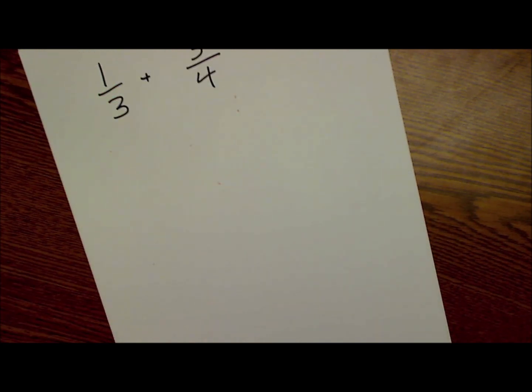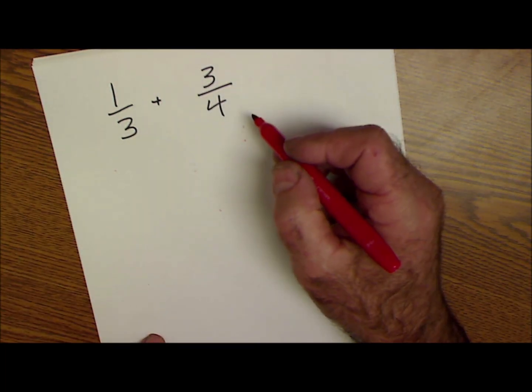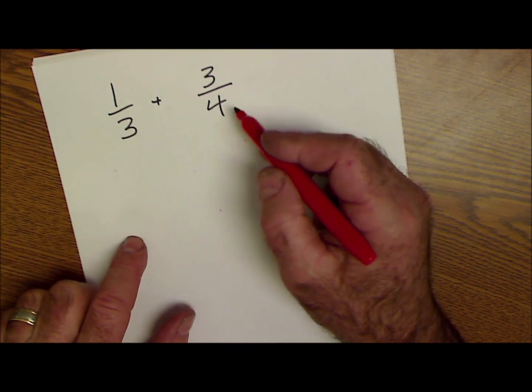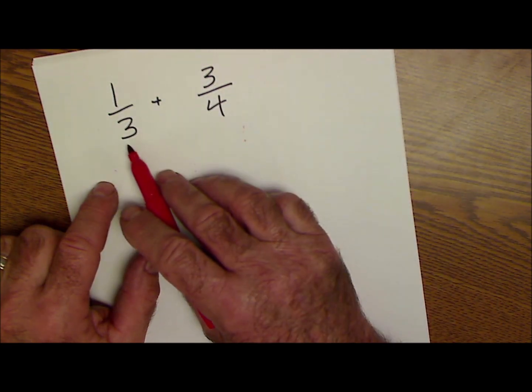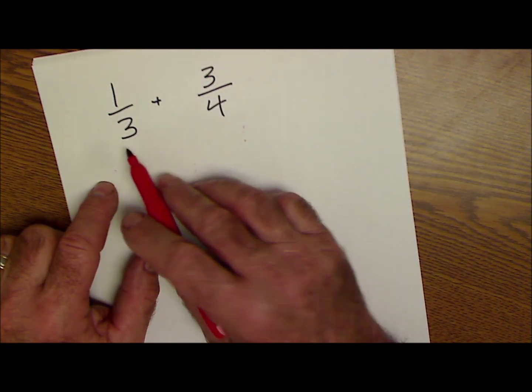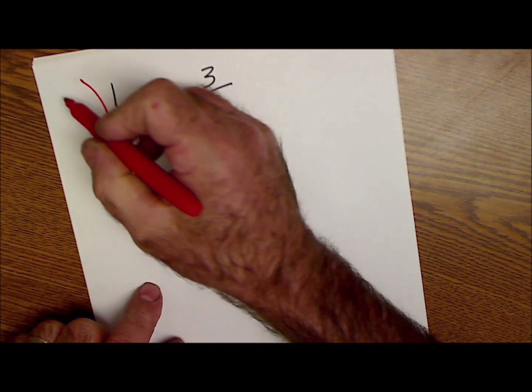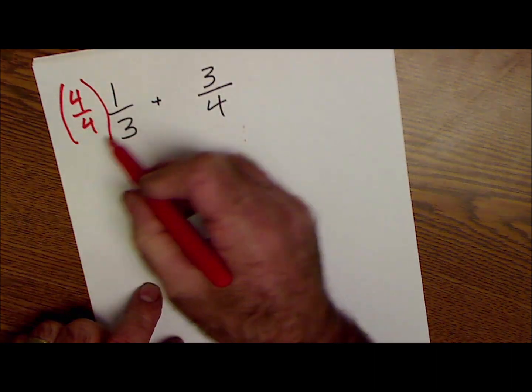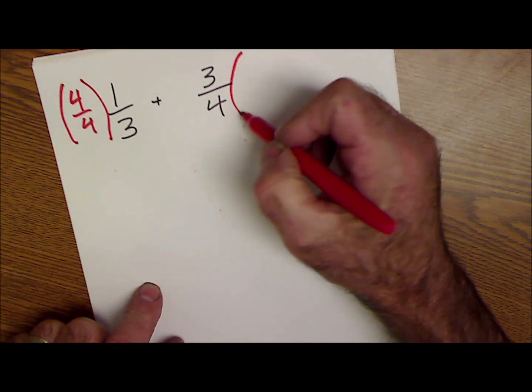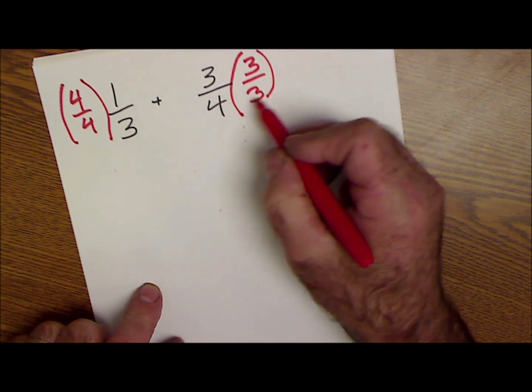Right here, it gets a little bit more complicated. Remember, the goal is to have the same number on the bottom. There's not one number I can multiply one of these fractions by to get there. So I got to look for the number that both of these are going to go into. So three times four is 12. 12 is going to be that number. I'm going to multiply by one here, four over four, that's equal to one, but that's going to give me a 12 on the bottom. I'm going to multiply by one here, three over three, that's going to give me a 12 on the bottom.